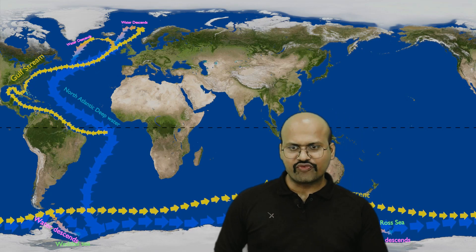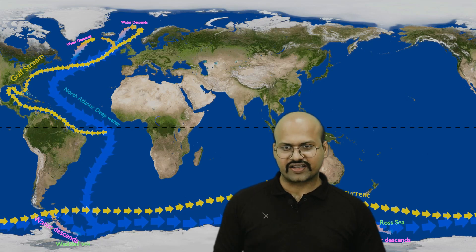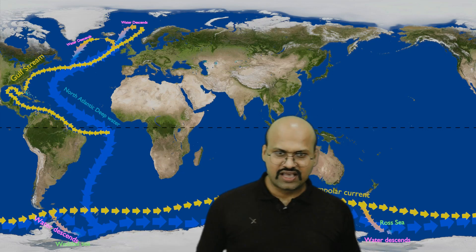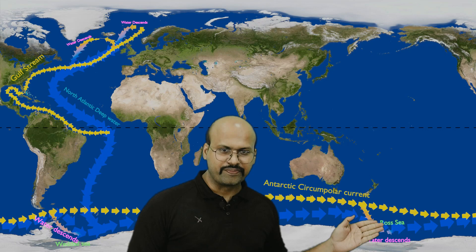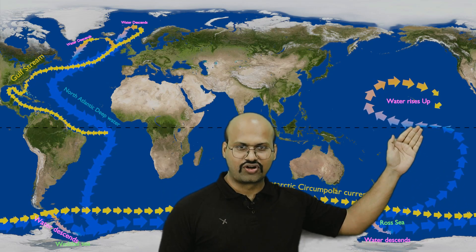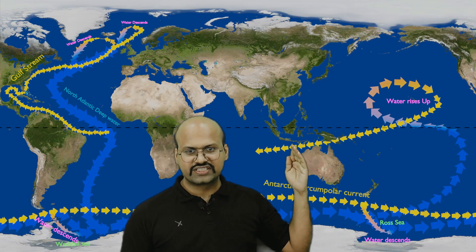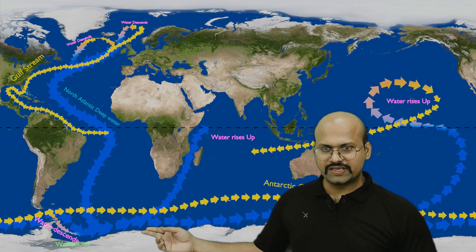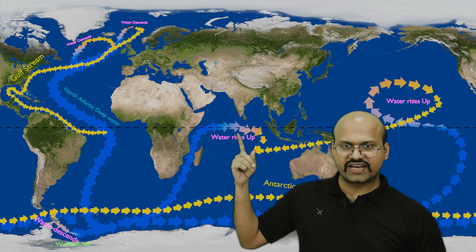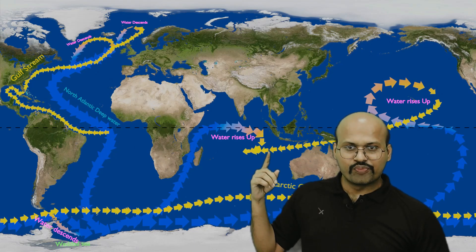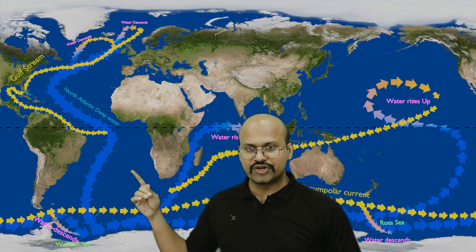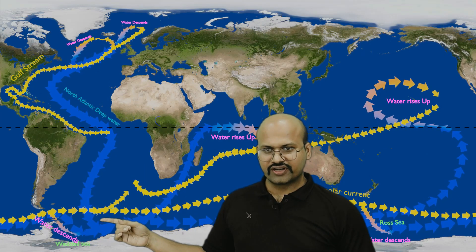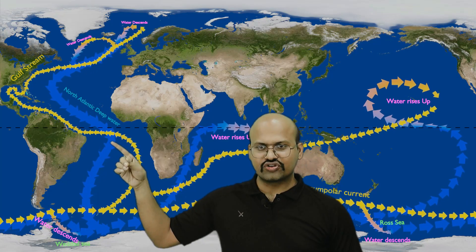Just as there is an Antarctic Circumpolar Current on the surface, there is also a deep water current circling Antarctica that combines waters from the North Atlantic Deep Water, the Weddell Sea, and the Ross Sea. Some of this deep water moves northward into the Pacific region, where it warms up slowly and rises to the surface, then flows through the Indonesian region into the Indian Ocean. Another branch flows directly into the Indian Ocean, also warms and rises. Both branches combine and flow together into the Atlantic Ocean, completing the thermohaline circulation.